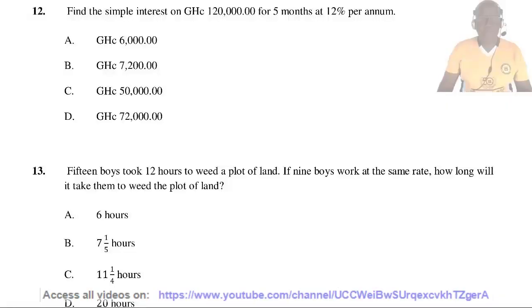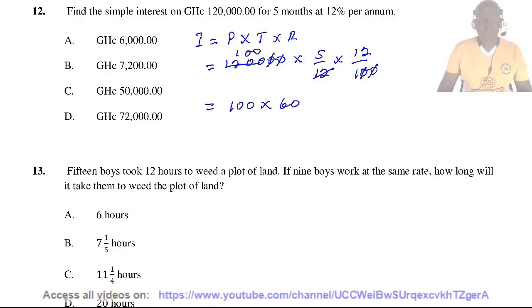Question 12. Find the simple interest on 120,000 cedis for 5 months at 12% per annum. The interest equals principal times time times rate. The principal is 120,000, the time is 5/12 years, and the rate is 12/100. 12 goes into 120,000, leaving 10,000. 5 times 12 is 60, so 6,000. So the answer is A.